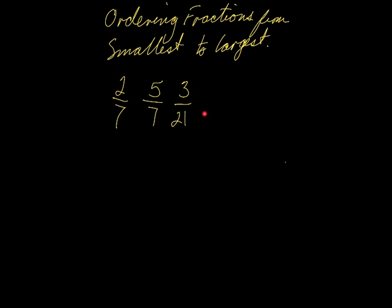The first thing I'm going to do is change all these denominators to the same thing. I'm going to need to change the 2/7 and the 5/7, because I noticed that 21 is on the 7 times table. So I'm going to change all the denominators to 21.